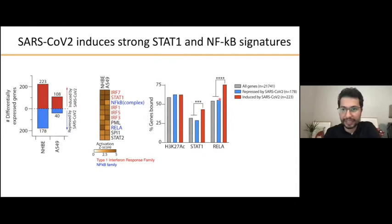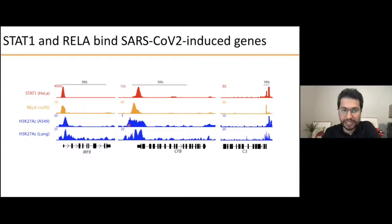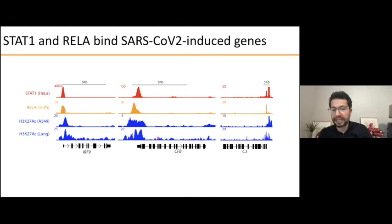Next to CFB, for example, there is binding of STAT1 and RelA, and ChIP-seq binding of H3K27 acetylation — indicating an enhancer region where transcription factors bind and regulate these genes. To summarize: the complement pathway is activated in response to SARS-CoV-2, and it is STAT1 and NF-κB dependent.